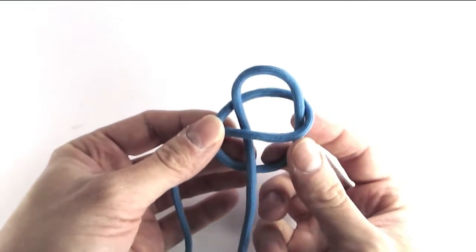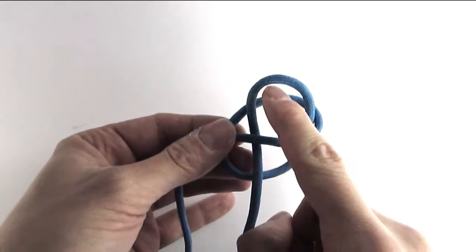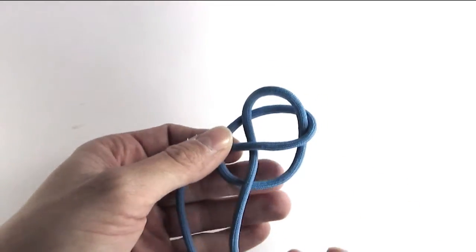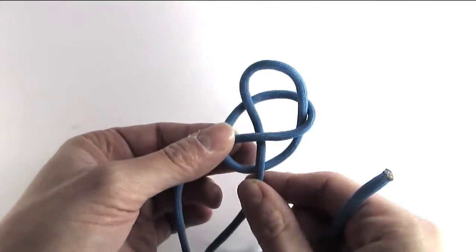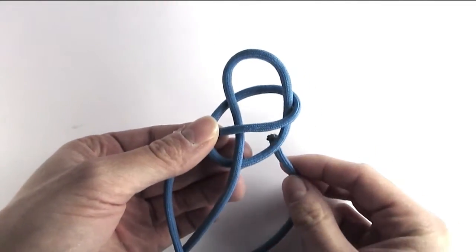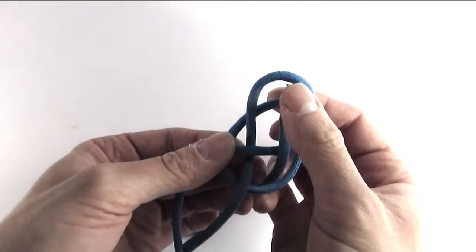Then we're going to adjust our knot so that we have four parts here at the center and we're going to weave through them, going under, over, under, over.